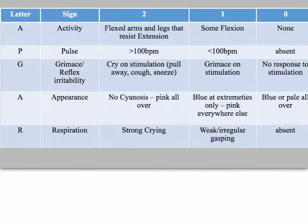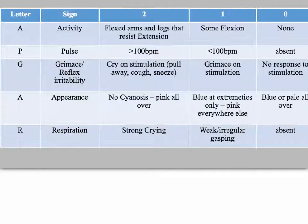For Appearance, you're looking for cyanosis or paleness. If the baby is pink all over, that's a score of 2 — a healthy color. Most babies score 9 out of 10 at 5 minutes because it's nearly universal to have blue extremities, giving a 1 for appearance. Blue or pale all over is a score of 0. For Respiration, strong crying gets a 2. Weak, irregular, or gasping breathing is a score of 1, and absent breathing is 0. The highest possible score is 10, and most babies score 9 due to color.